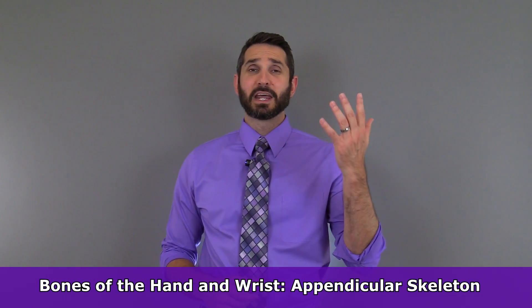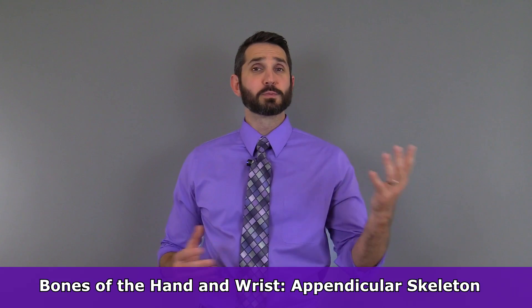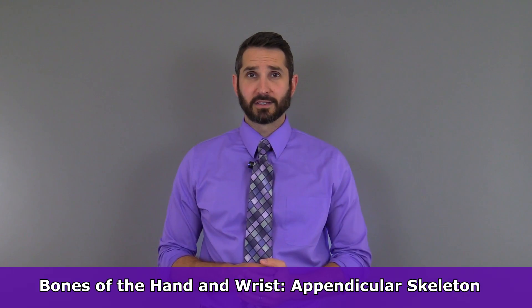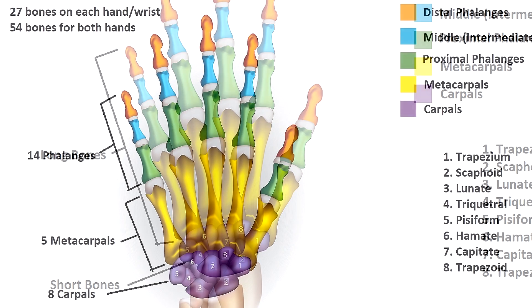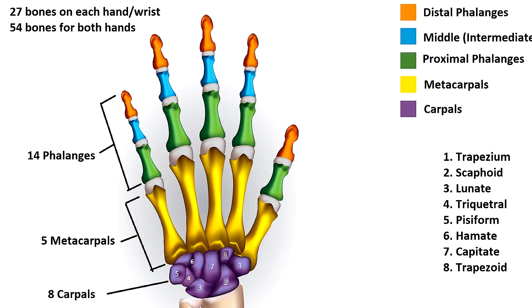Hey everyone, in this anatomy and physiology lesson I'm going to cover the bones of the hand and wrist, which make up part of your appendicular skeleton. These bones consist mostly of long bones except for the eight bones of the wrist called carpals, which anatomists classify as short bones. The bones of the hand and wrist can be broken down into 14 phalanges, 5 metacarpals, and 8 carpals.